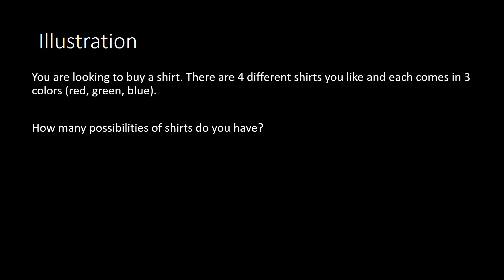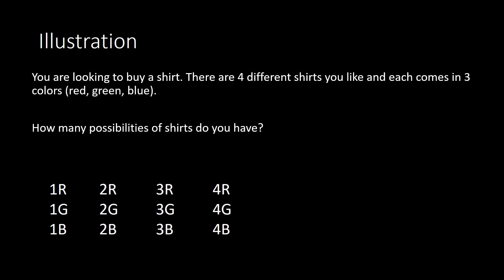For the first shirt, we have three colors: red, green, or blue. For the second shirt, we also have red, green, or blue. Third shirt: red, green, or blue. Fourth shirt: also red, green, or blue. So our total number of options would be 3 times 4, or 12. So we have 12 options to choose from.